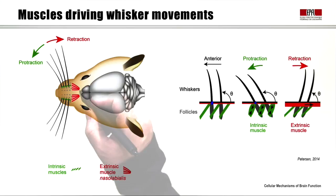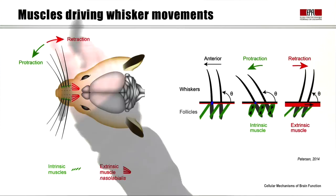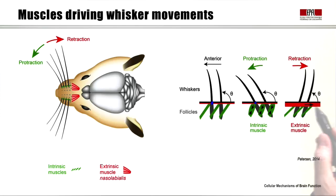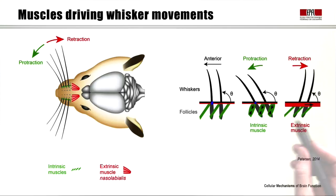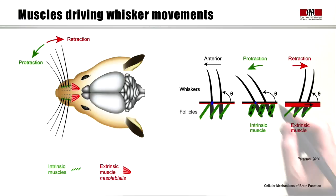The other important group of muscles are the so-called extrinsic muscles, anchored onto bone outside the whisker pad. When they contract, they pull the whiskers backwards, causing whisker retraction. So we have intrinsic muscles that generate protraction and extrinsic muscles that generate retraction of the whisker.